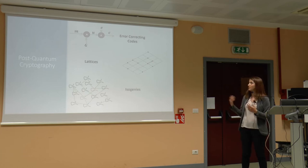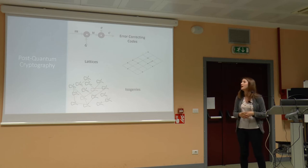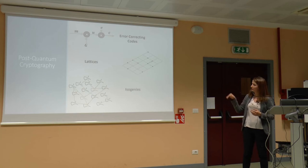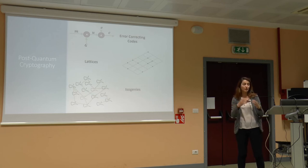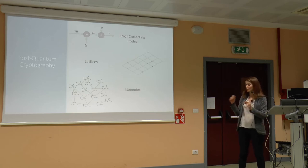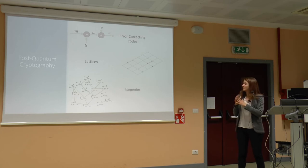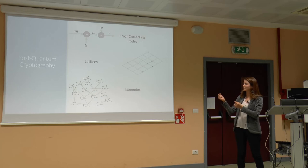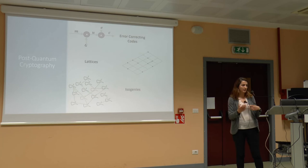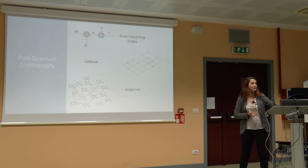The error-correcting code-based cryptosystem, called the McEliece cryptosystem, has had at least 30 years of researchers working on it, so it is supposed to be more secure than the other two proposals. Lattices are based on the hardness of finding the shortest vector in a lattice with a huge number of dimensions. Isogenies are based on maps between elliptic curves with particular properties — given one curve it is difficult to retrieve the other unless it has already been shared with the other party.